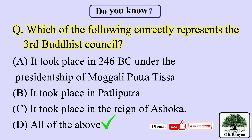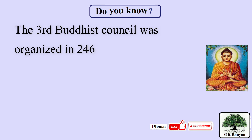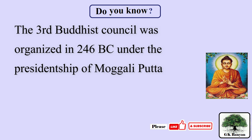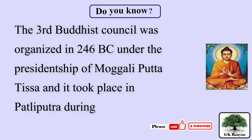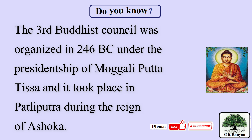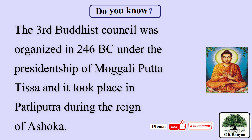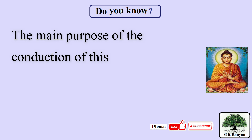The right answer is D — all of the above. The third Buddhist council was organized in 246 BC under the presidentship of Moggaliputta Tissa, and it took place in Pataliputra during the reign of Ashoka. The main purpose of the third Buddhist council was to revise the scriptures once again.